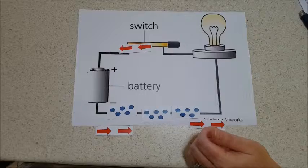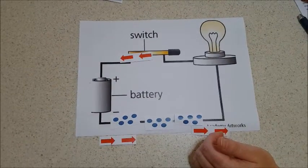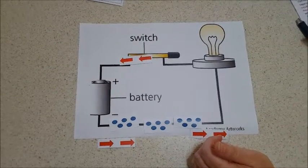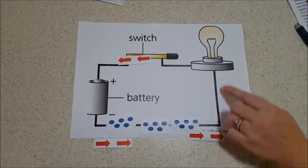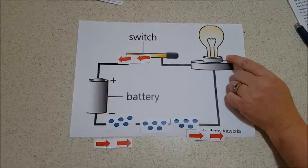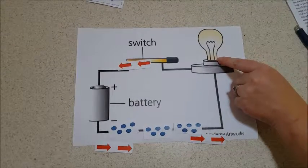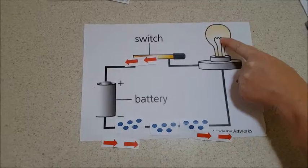This causes the movement of electrons in a circuit which creates an electric current. The current travels through this wire into the light. From here, the electrons flow up the wire inside the bulb and across the filament.